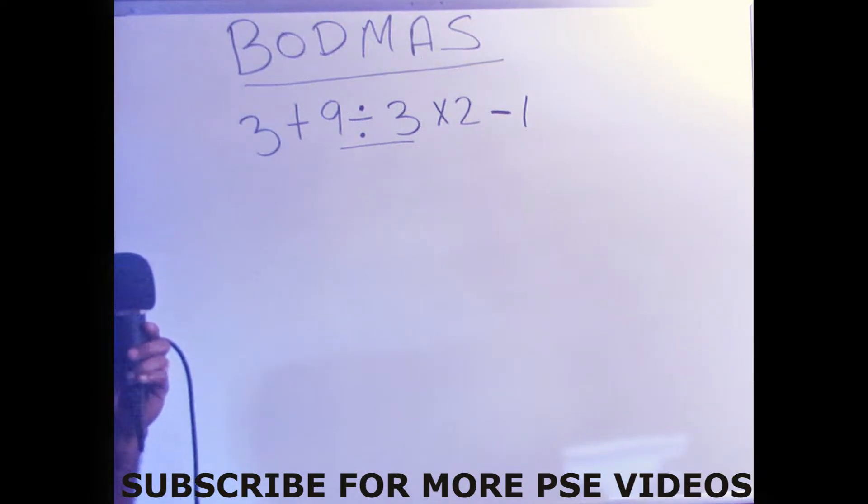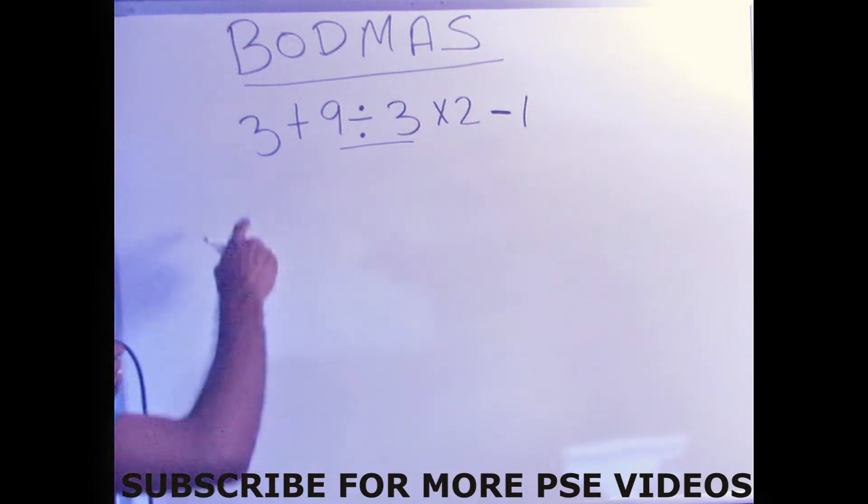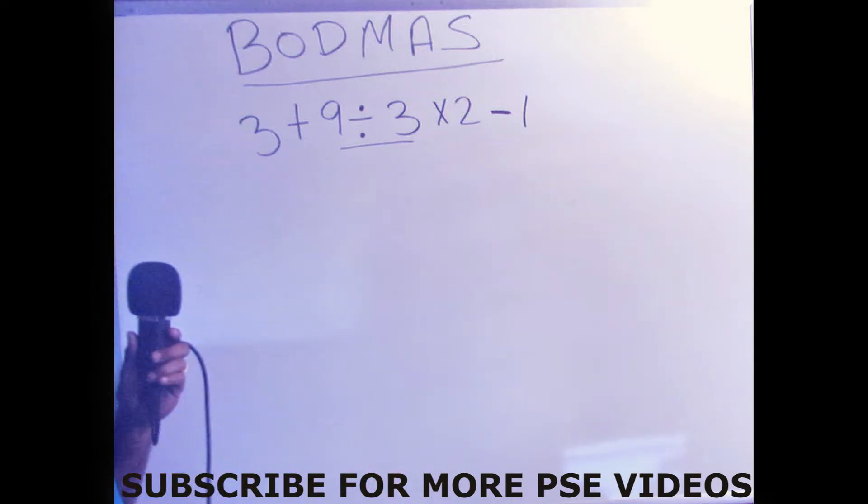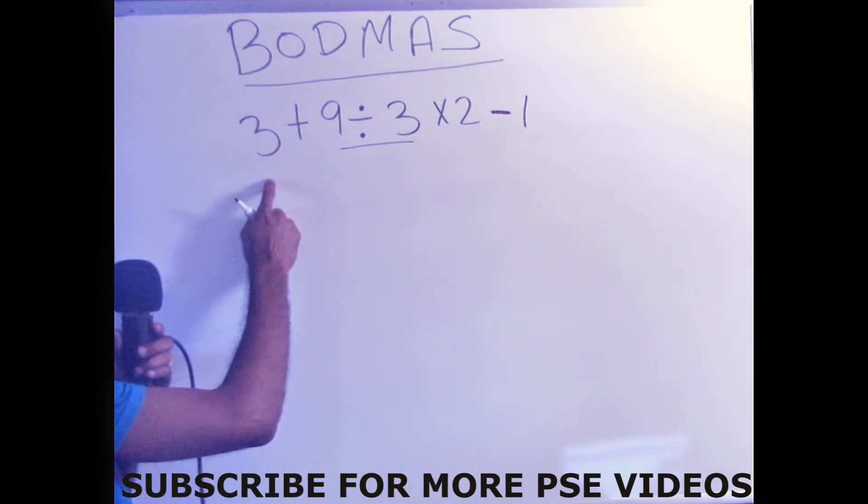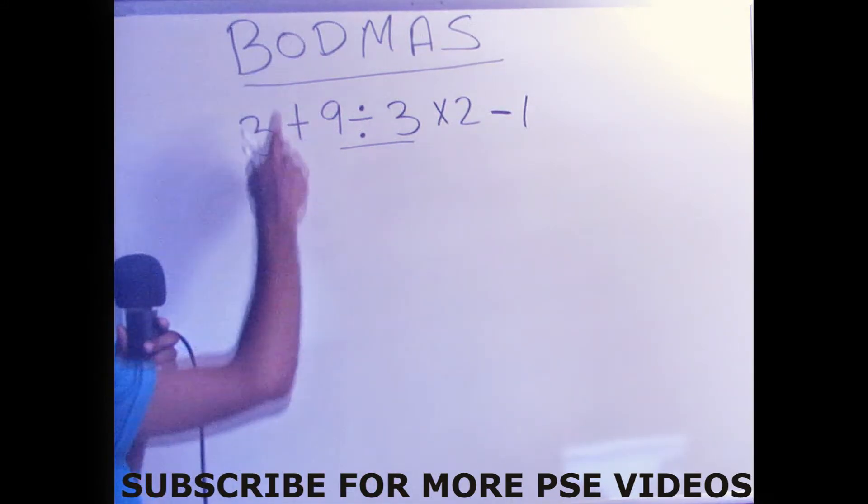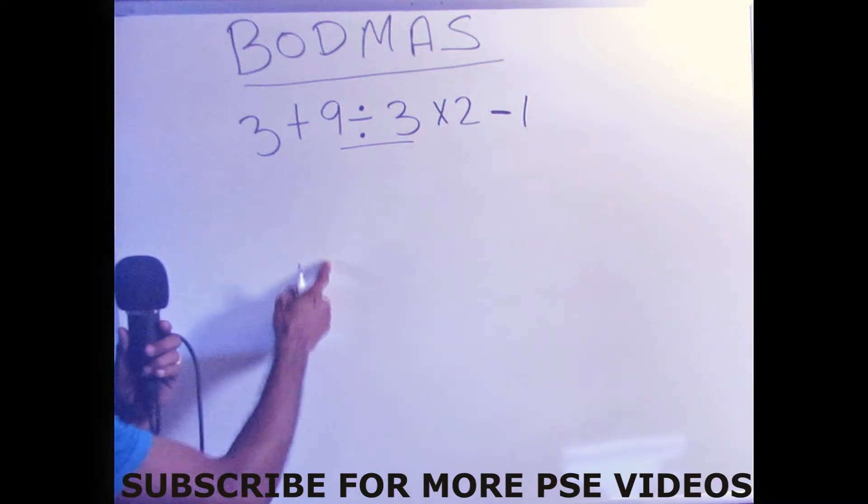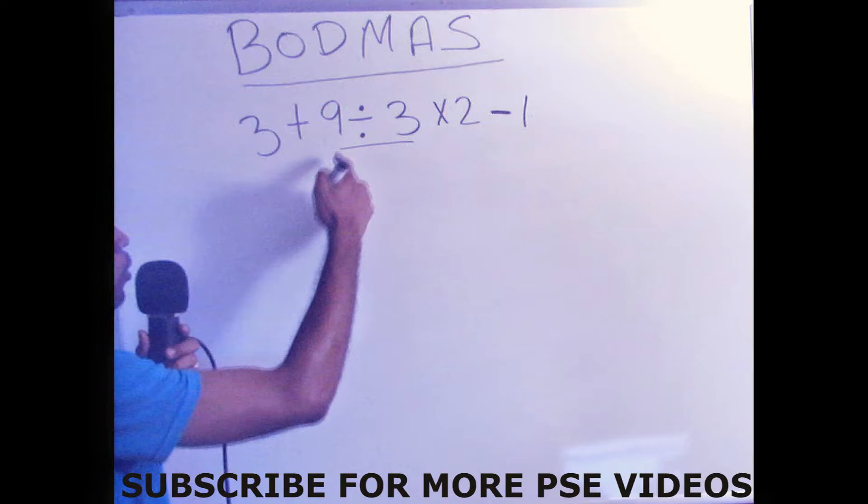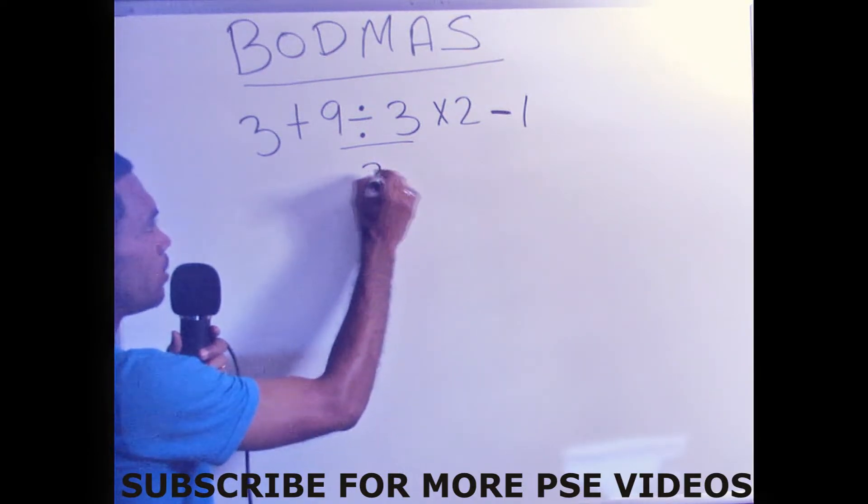So let's go straight into solving the problem. The problem says 3 plus 9 divided by 3 times 2 minus 1. If we look, there is nothing in brackets, so we skip that. Operations, nothing such as exponent. Division, yes, we can divide because 3 can go into 9, and 3 into 9 is three times.